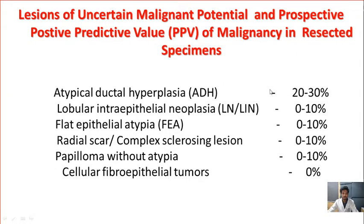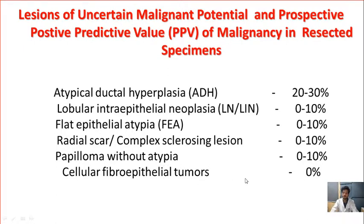The lesions of uncertain malignant potential and the prospective predictive value of malignancy in the resected specimen: atypical ductal hyperplasia has been found to be 20 to 30%, lobular intraepithelial neoplasia 0 to 10%, flat epithelial atypia 0 to 10%, complex sclerosing lesion 0 to 10%, papilloma without atypia 0 to 10%, and cellular fibroepithelial tumor has no increased risk at 0%.